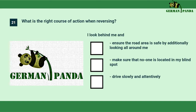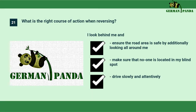What is the right course of action when reversing? I look behind me and ensure the road area is safe by additionally looking all around me. I make sure that no one is located in my blind spot. I look behind me and drive slowly and attentively.